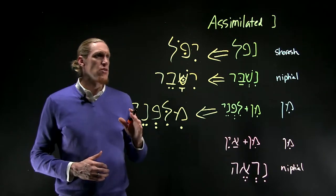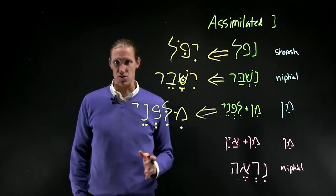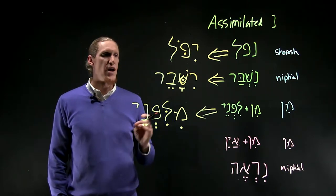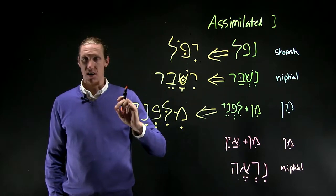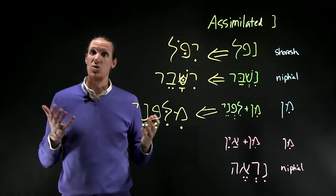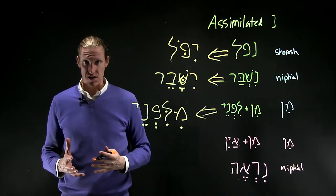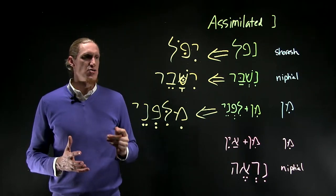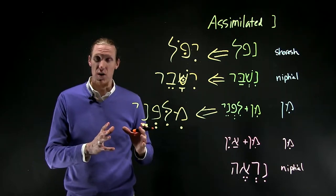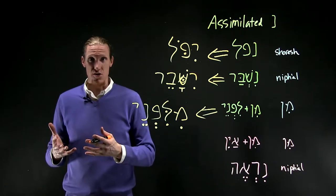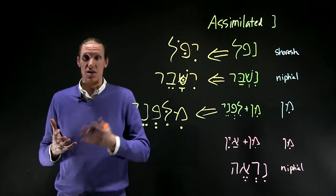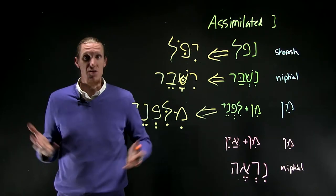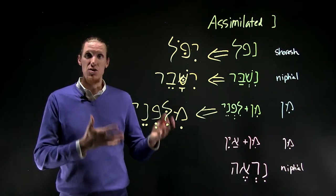Now, it's called the assimilated noon because when the noon goes into the next letter as a dagesh forte, the dagesh forte is a doubling dagesh. And just like in culture, when someone enters a new culture and they assimilate into the culture, once they've assimilated, they're indistinguishable from the others in the culture. It's the same way with the noon.